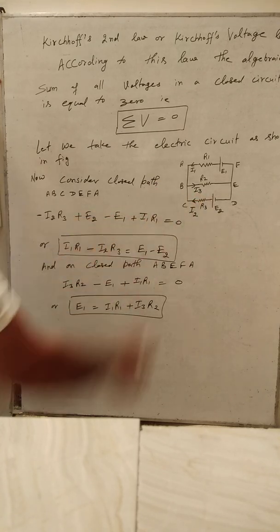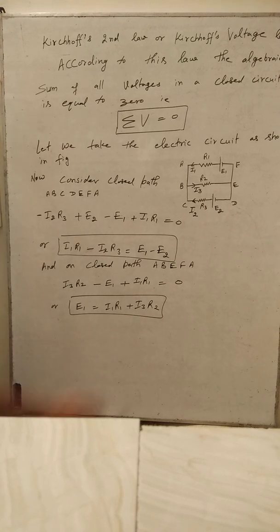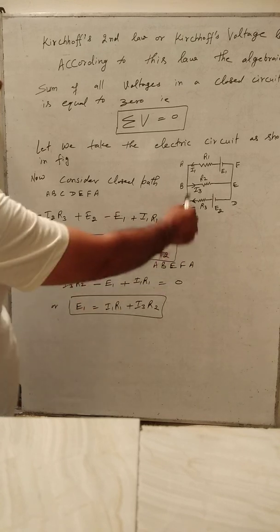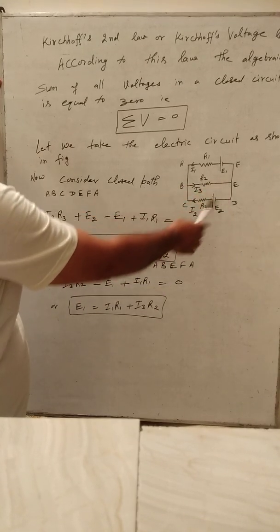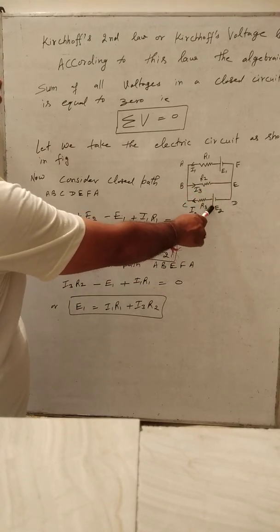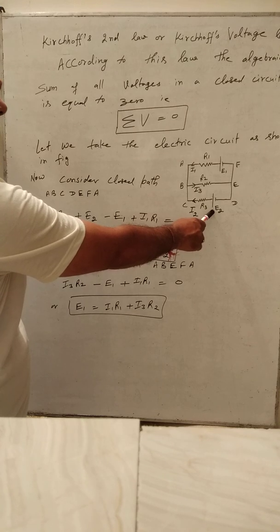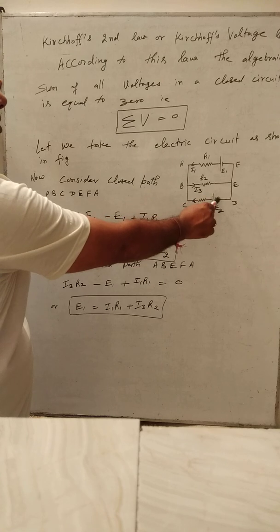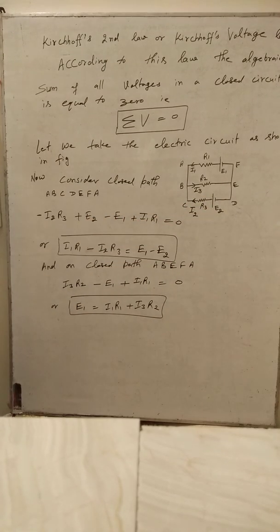The product of current and resistance is taken as negative if current is opposite to the closed path which we consider. For the cell or battery, while going on the closed path, if the positive terminal comes first, then the EMF is taken as positive. If the negative terminal comes first, then it's taken as negative EMF.